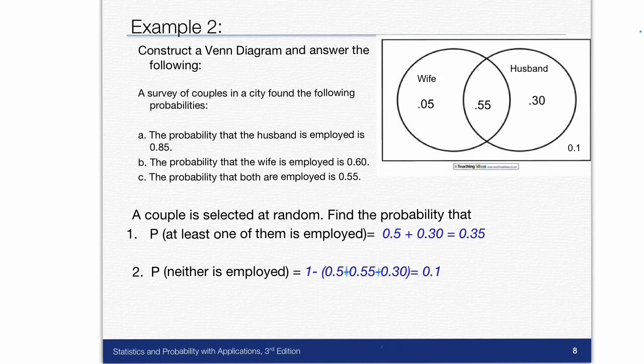Here's another example. Construct a Venn diagram and answer the following. A survey of couples in a city found the following probabilities.